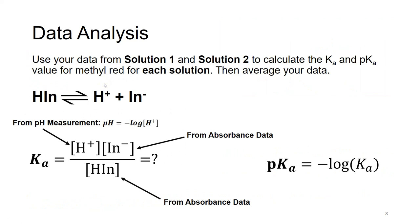Now let's look at data analysis. The equilibrium constant Ka for this acid ionization is [H⁺][In⁻] / [HIn]. We use absorbance spectroscopy to determine concentrations of In⁻ and HIn, and a pH probe to get the pH of the solution. pH equals negative log (base 10) of the concentration of H⁺. For example, a pH of 2 gives [H⁺] = 10⁻² M, and a pH of 3 gives [H⁺] = 10⁻³ M.